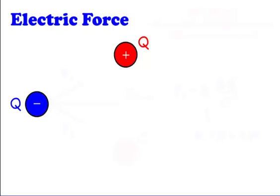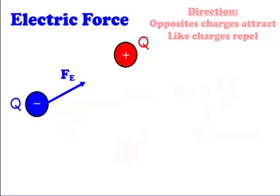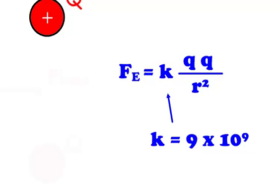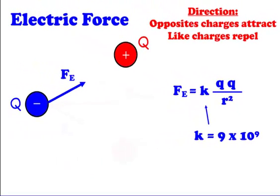These electric field lines produce an electric force, just like the gravitational field strength around the Earth produces a gravitational force. Here we're going to look at the blue negative charge — it's going to be feeling an electric force towards the red positive charge because opposite charges attract. Opposite charges attract, whereas like charges repel. And there's a nice easy equation for the electric field strength: it is k·q·q over r². k is a constant — because constant begins with the letter k — and it's 9 times 10 to the 9. q are the charges: one q is one charge, the other q is the other charge. And r squared is their distance squared.